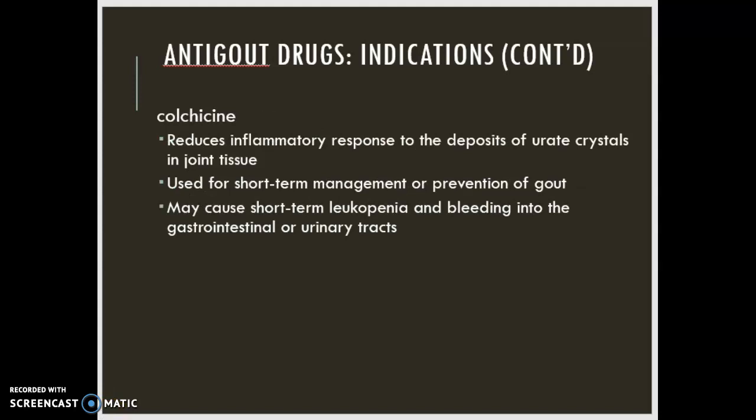Our anti-gout medication, other than the corticosteroids, NSAIDs, and indomethacin, is colchicine. This medication is an older drug, but it is still used because we do have patients who cannot take NSAIDs. It reduces the inflammatory response to deposits of urate crystals in joint tissue. It's used for very short-term management or the prevention of gout. It can cause short-term leukopenia and bleeding into the gastrointestinal or urinary tracts. Diarrhea and cramping are pretty predictable with therapeutic doses, which is one of the reasons it's fallen out of favor and we use more of the indomethacin, corticosteroids, or NSAIDs.